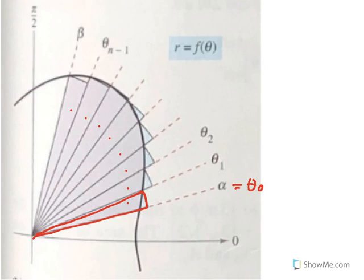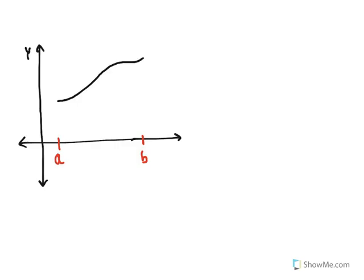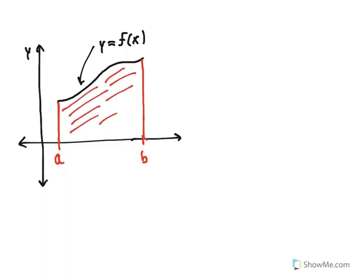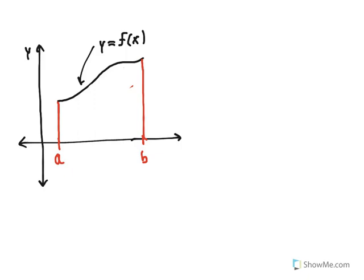I'd like to briefly relate this to what you did in Calculus AB. In Calculus AB, you had a curve given by a rectangular equation y equal to f(x) on the interval from x equal to a to x equal to b. You wanted to find the area under the curve and above the x-axis between x equal to a and x equal to b. Because the curve forming the top boundary is not a line segment, there is no geometry formula for the exact area, so you went through the same process: approximating the area of a region using a representative element.